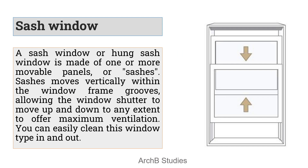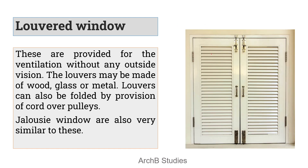Next we have the sash window. Sash windows are similar to sliding windows, but the panels or sashes move up and down — in sliding windows it was left or right. The difference between sash and sliding windows is the technology used to move the sashes. In sliding windows it was roller bearings, but sash windows don't use roller bearings, because if you move it up it will come back down due to gravity. So a different technology is used where if you move it a little bit up, it will stay there and not come down.